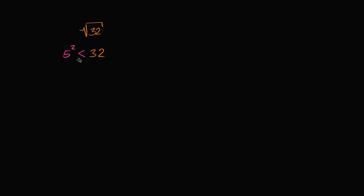So maybe I should write it this way. 5 squared is less than 32. And then 32, what's the next perfect square after 32? Well, 32 is less than 36. So we could say 32 is less than 6 squared.